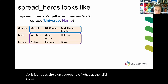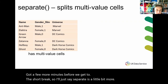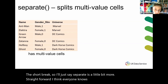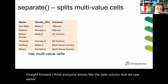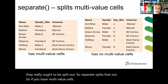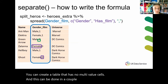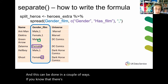We've got a few more minutes before the short break. Separate is a little more straightforward. Like the date column we saw earlier, sometimes things are jammed together in one column and really ought to be split out. Separate splits that out — if you have multi-value cells, you can create a table that has no multi-value cells. This can be done in a couple of ways. If you know there's a consistent format — a particular marker, in this case a comma — there's always the gender of the superhero, a comma, and then a one or zero to indicate whether they have a film.